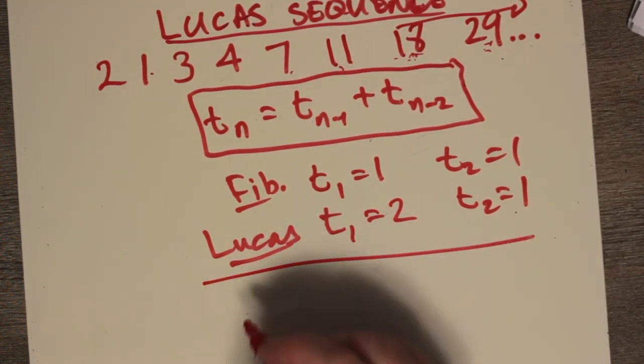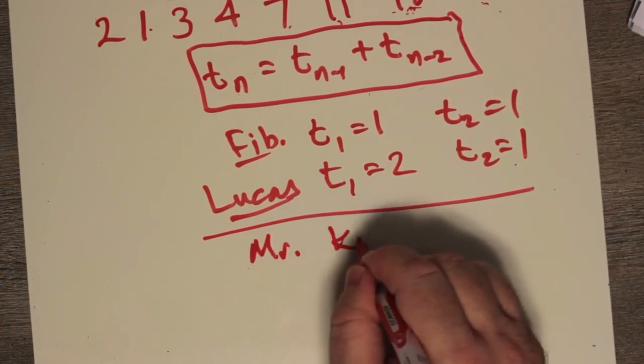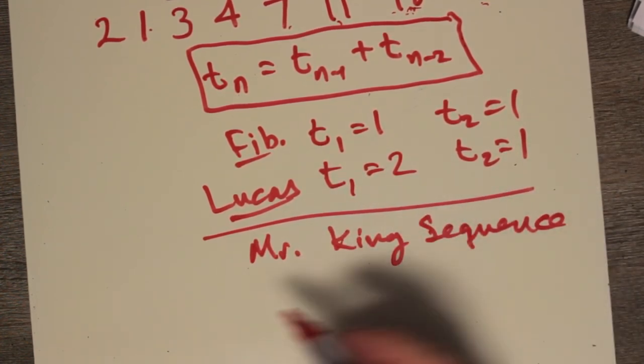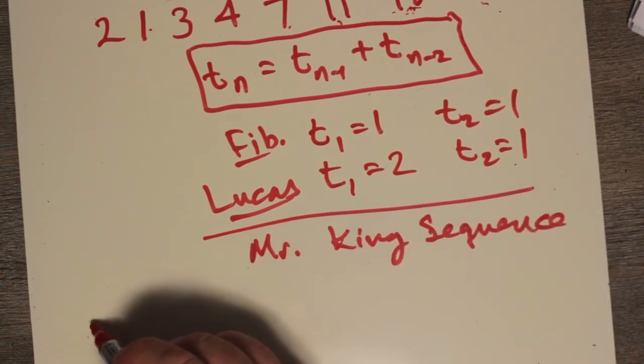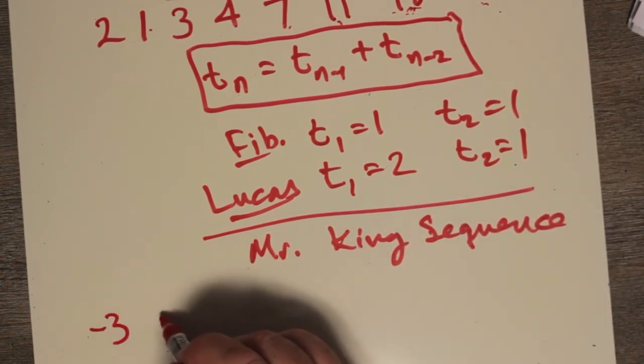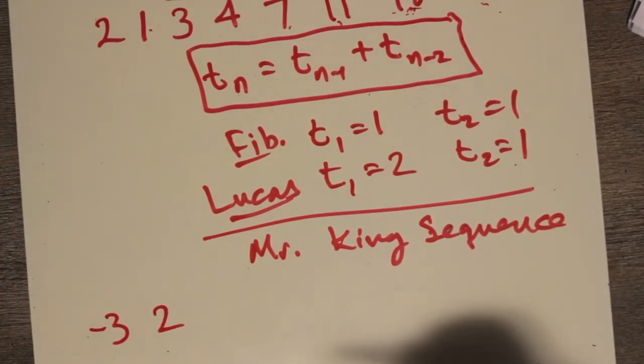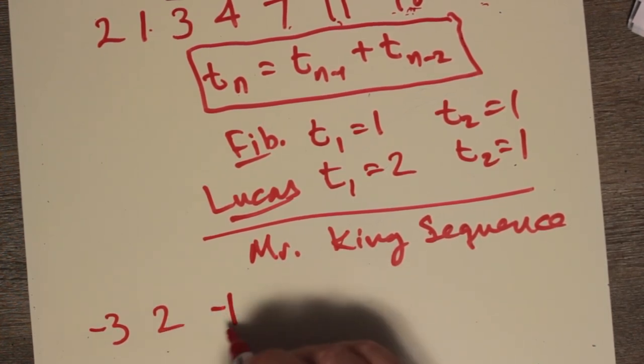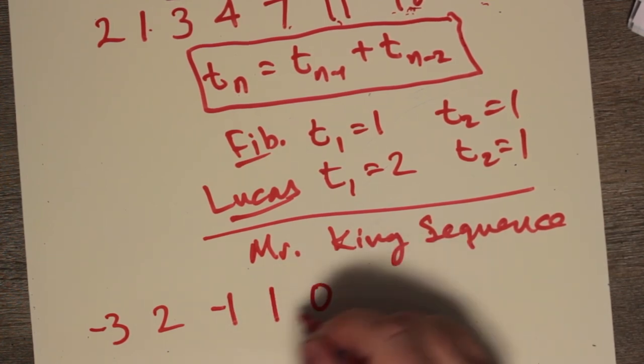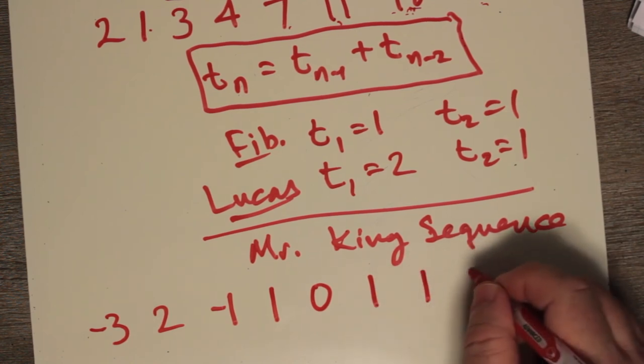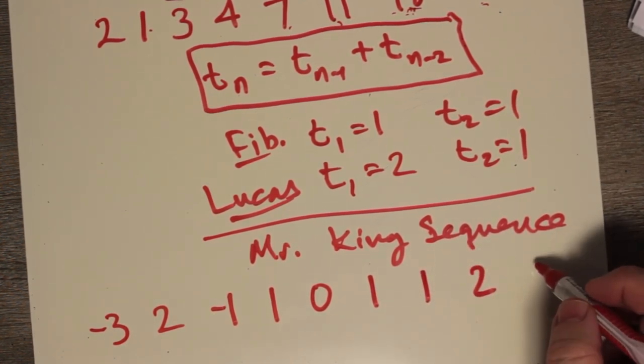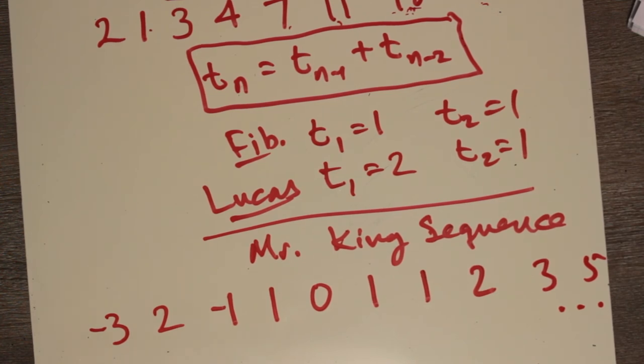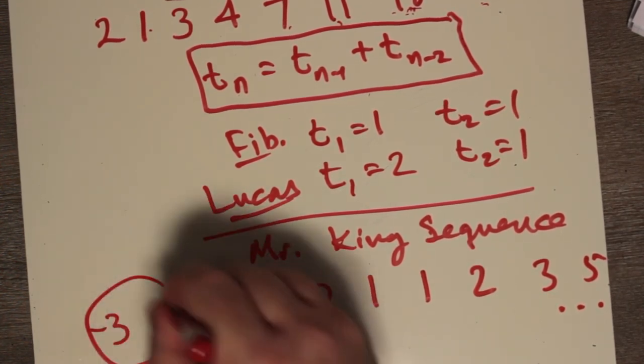Here, I'm going to make myself famous now. And I'm going to call this the Mr. King sequence. Just to illustrate that these rules are whatever they are. Maybe we can use negative 3 and 2. Okay. Negative 3 and 2. So negative 3 and 2 make negative 1. 2 and negative 1 make 1. 1 and negative 1 make 0. 1 and 0 make 1. 0 and 1 make 1. 1 and 1 make 2. Oh, dear. Look. I got the Fibonacci sequence by accident. 1 and 2 make 3. 2 and 3 make 5. I think I just ripped off the Fibonacci sequence without intending to.